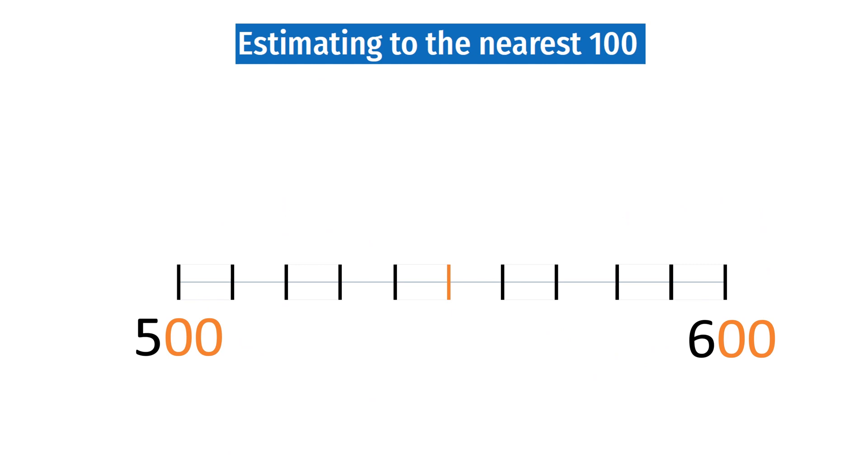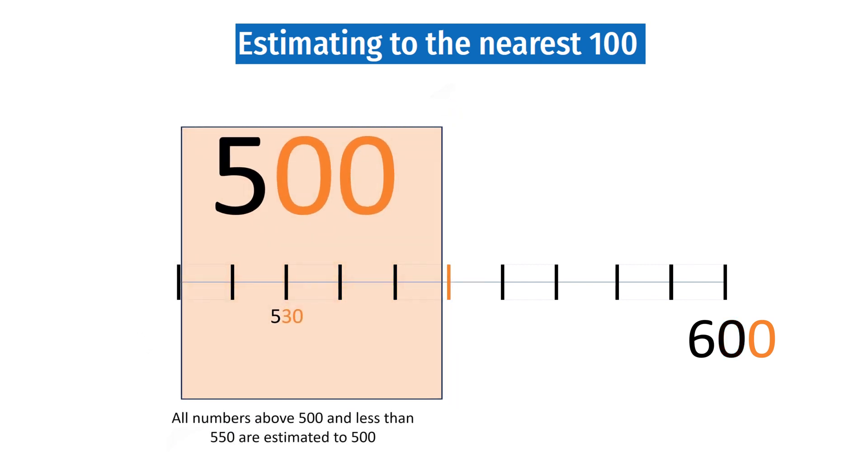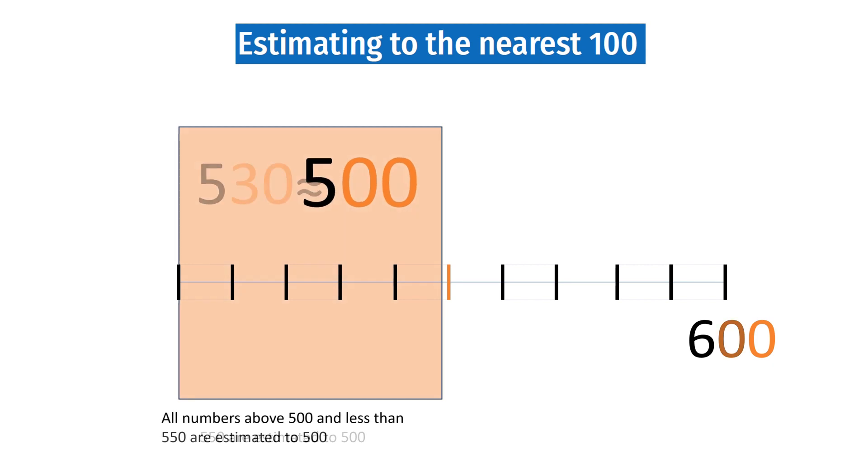Now, notice the midpoint. The number 530. On the number line, 530 is closer to 500 since it is on the left of the middle. So 530 estimated to the nearest 100 is 500.